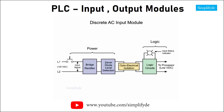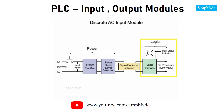Starting with the AC discrete input module, the circuit is comprised of two sections. The first section is referred to as the power section, and the second is called the logic section. Using an optical isolator, electrical isolation is provided between the power section and the logic section.